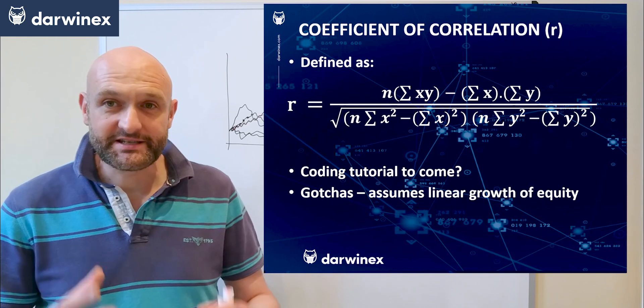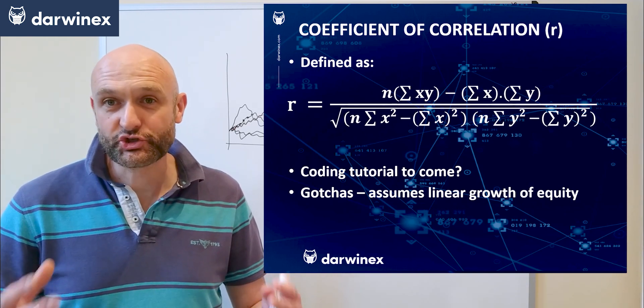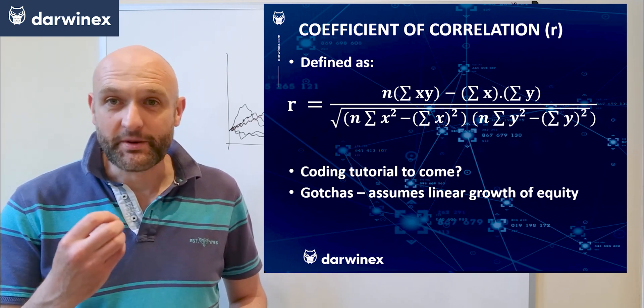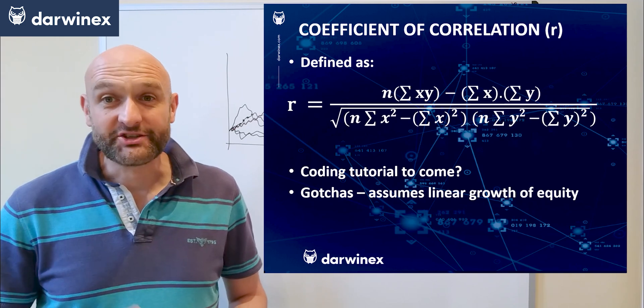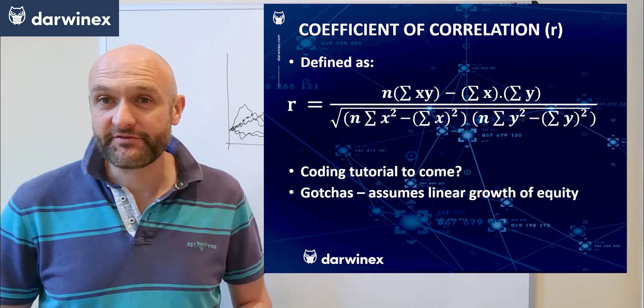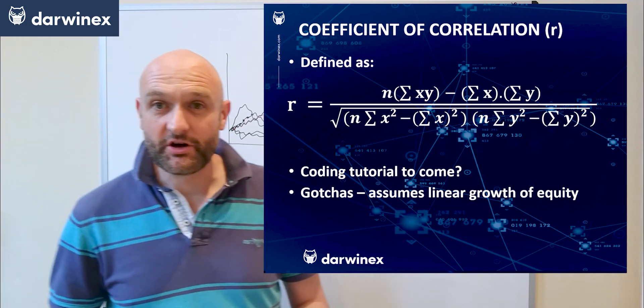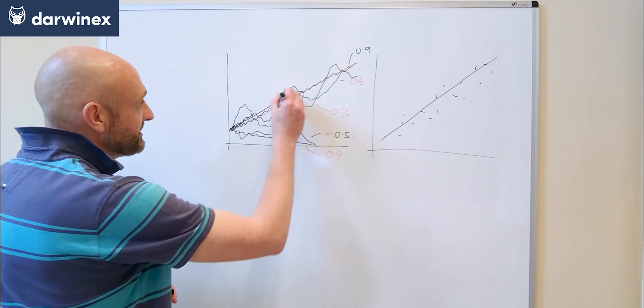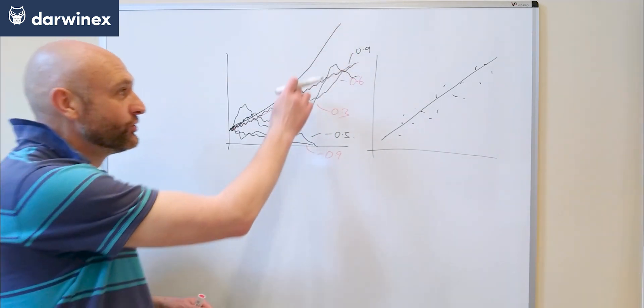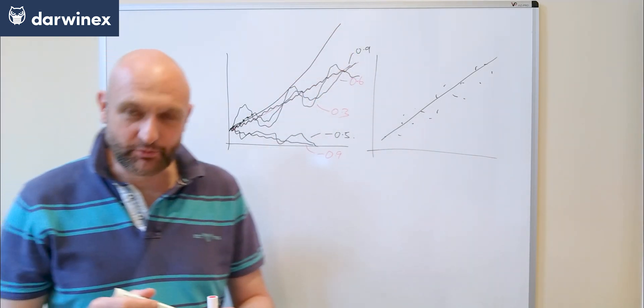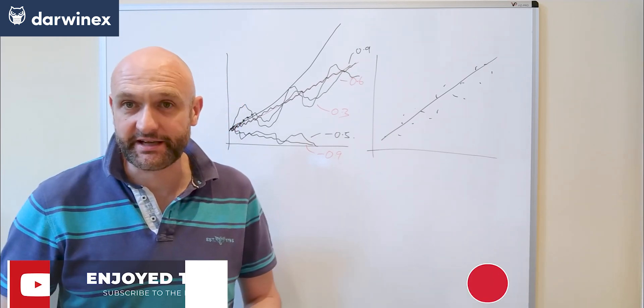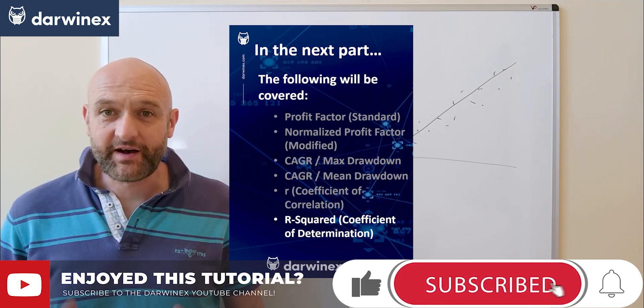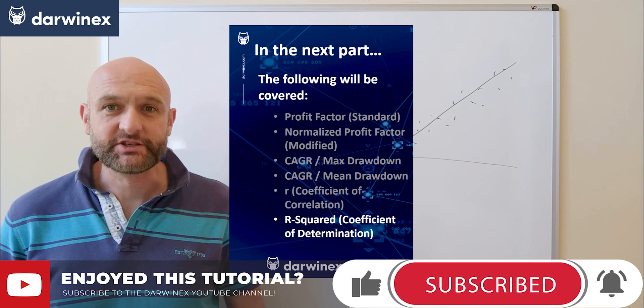The reason for that is because this is based around a linear regression model, a straight line, and so it scores those systems most highly that map onto a straight line. You will only get that by having a fixed position size. As soon as you start scaling your position size, you'll find that your equity curve starts to exhibit exponential behavior, and of course this doesn't fit to a straight line well at all and so it will be punished by this particular metric. Click on the link to part 10.3 where we move on to looking at our final performance metric, the coefficient of determination.